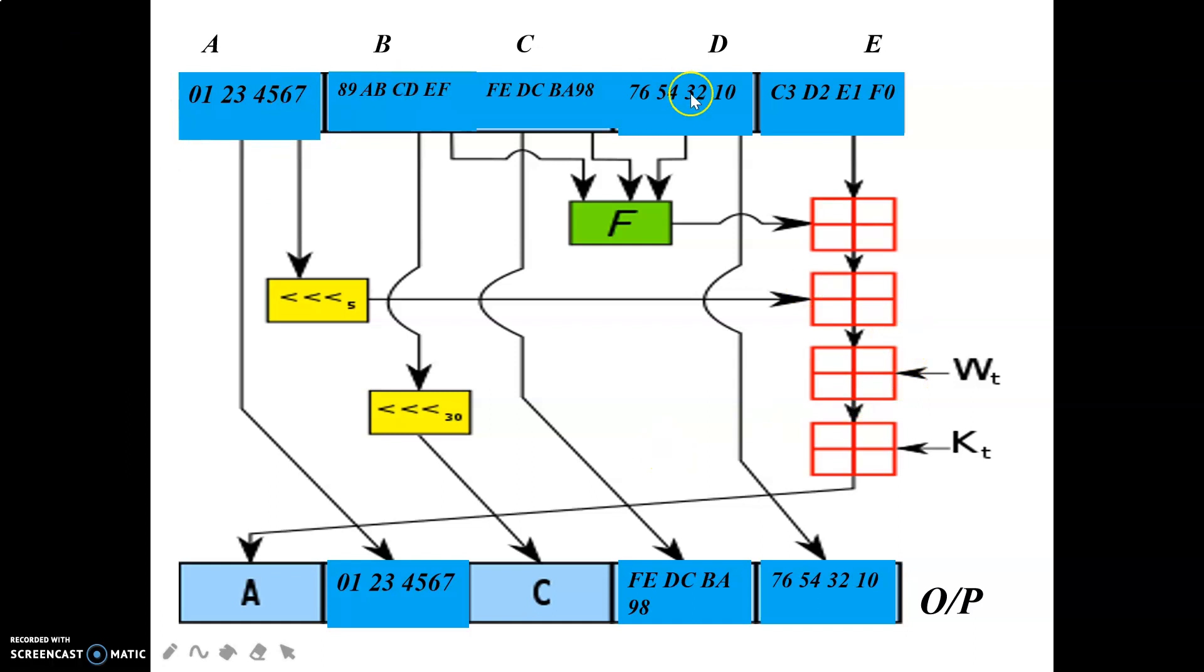Now, we will use these values and compute new A, B, C, D, E values. So new B is going to be old A, new C is going to be old B left shifted 30 times, new D is going to be old C, new E is going to be old D, and new A is going to be a function of words and constants. So let's see how we are going to calculate this new A value.